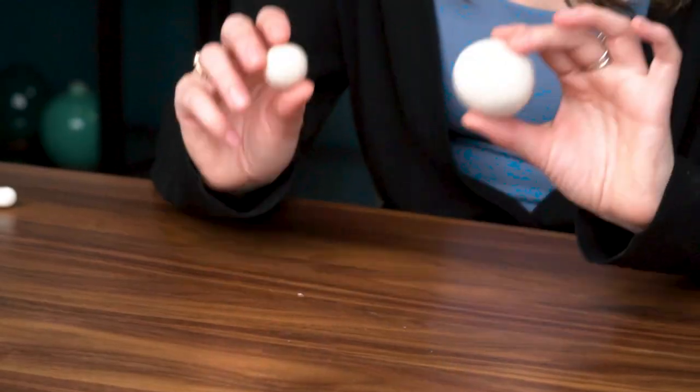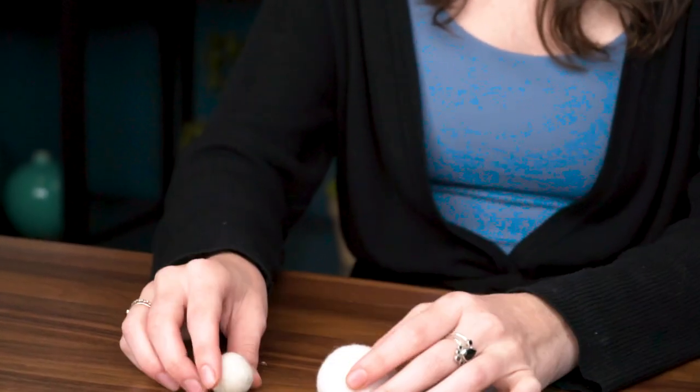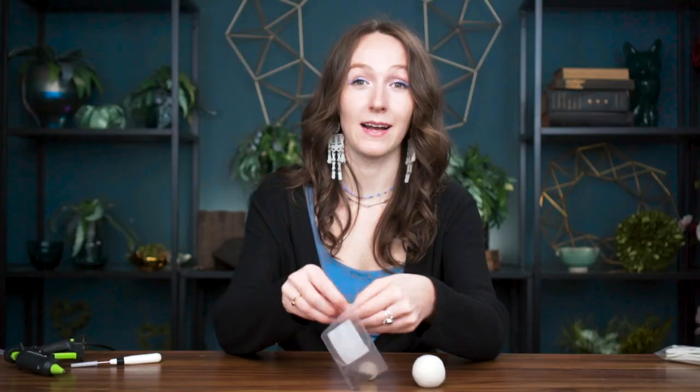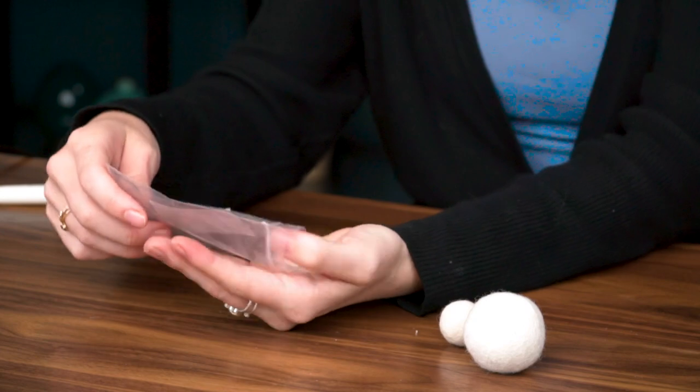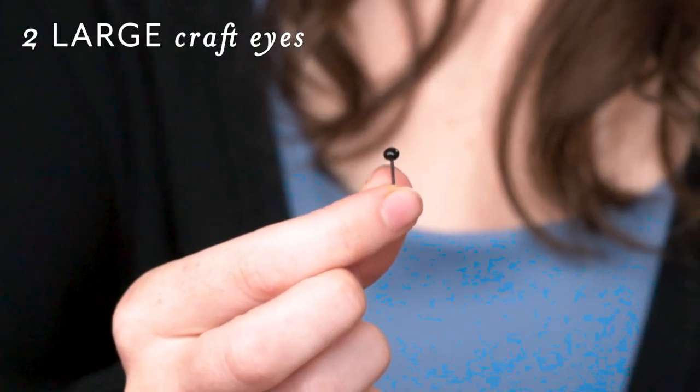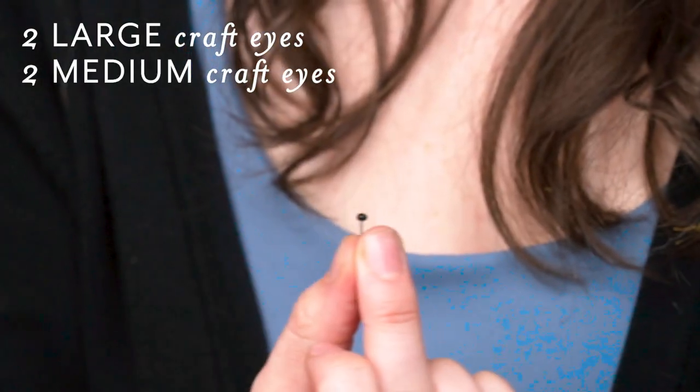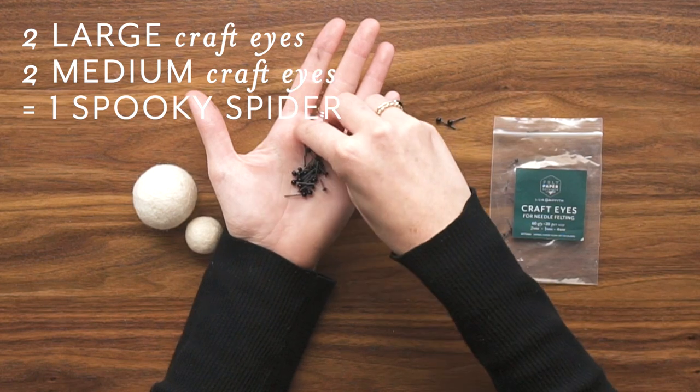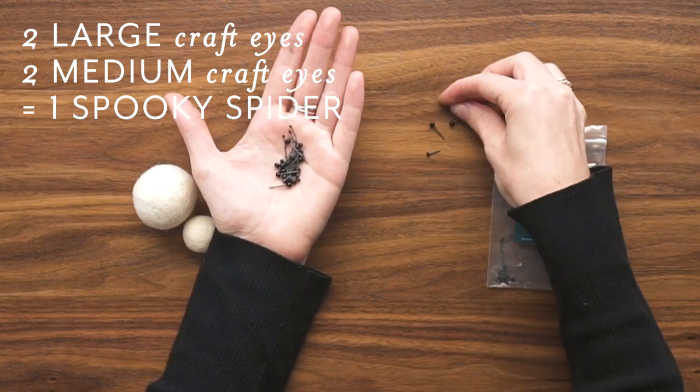I pulled out one of each size of cotton ball and we'll get started with the smallest size ball. I've got my crafting eyes and I'm going to find a couple different sizes. I'll be using one of the larger size as well as one of the medium sized, and we'll need to find two of each of those in this little pack. Okay, I've got my eyes all set out and ready to go.